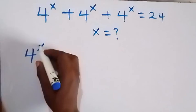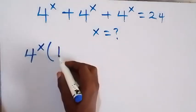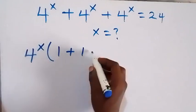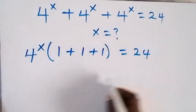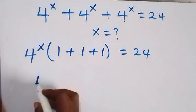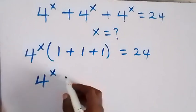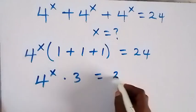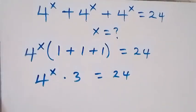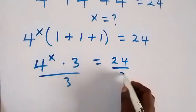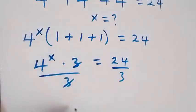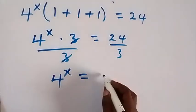raised to power x out, and when we divide by 4^x we get 1 + 1 + 1, which equals 24. Then 1 + 1 + 1 is 3, so we have 4^x multiplied by 3 equals 24. From here, to remove this 3, let's divide both sides by 3. 3 will cancel out here and 3 can go into 24, so here we have 4^x equals 8.